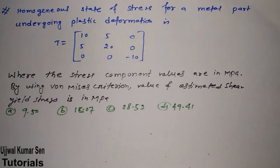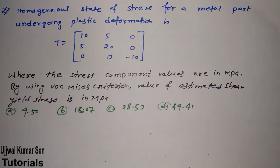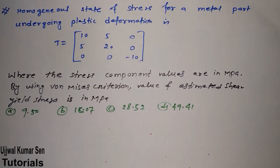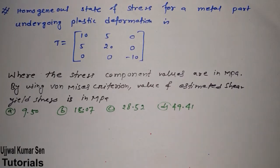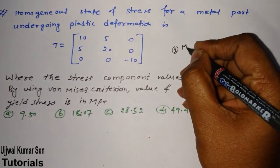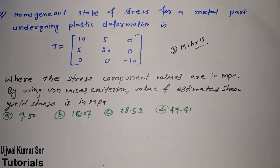This question will not be lengthy; it will be short, around 10 to 12 minutes, so you can put your 100% concentration. As you can see in this question, it states that a homogeneous state of stress for a metal part undergoing plastic deformation is given. Now we need to understand this equation, and here we have to use the Mohr's circle concept.